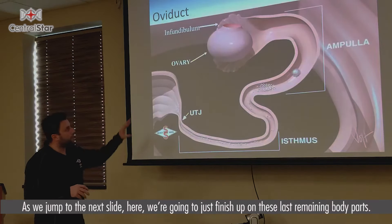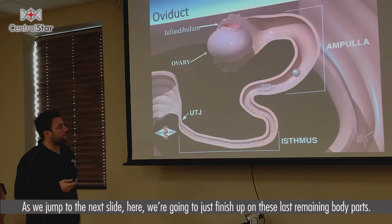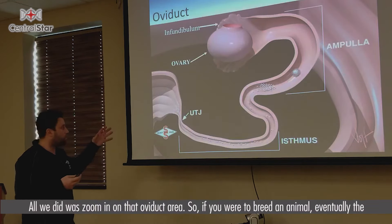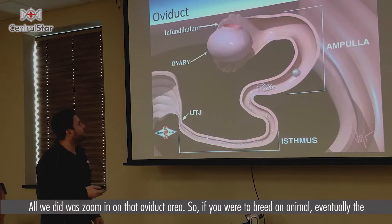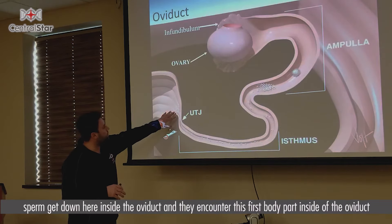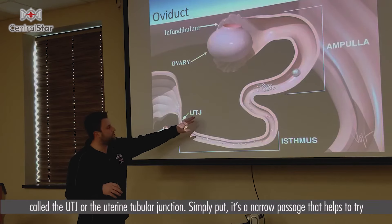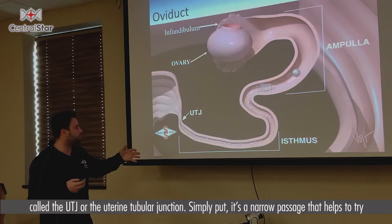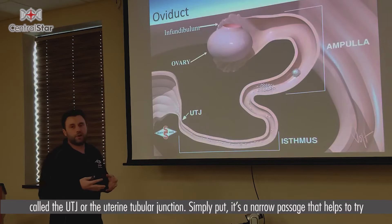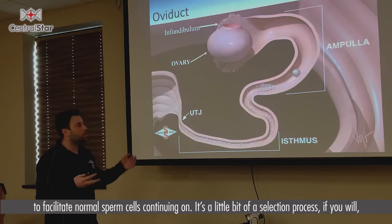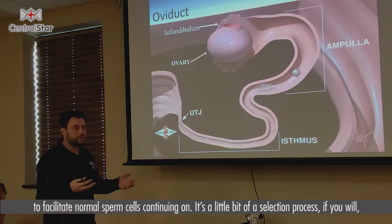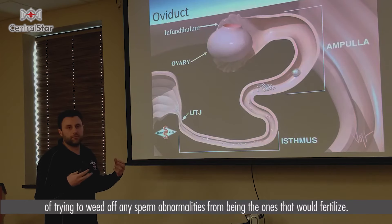As we jump to the next slide, we're going to finish up on these last remaining body parts — all we did is zoom in on that oviduct area. If you were to breed an animal, eventually the sperm get down inside the oviduct and encounter this first body part called the UTJ, or the uterine tubular junction. Simply put, it's a narrow passage that helps facilitate normal sperm cells continuing on — it's a bit of a selection process to try to weed out any sperm abnormalities from being the ones that would fertilize.